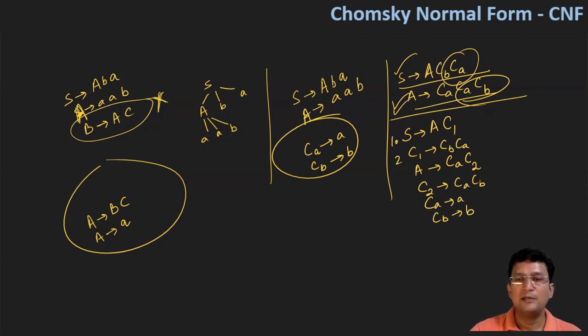Let's number all these 1, 2, 3, 4, 5, and 6. And this is the productions for the Chomsky normal form grammar.